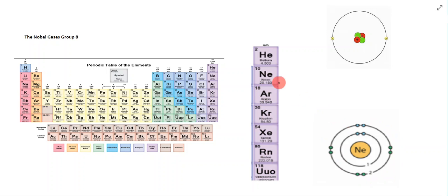They have eight electrons in their outer shell, with the exception of helium. Helium has two electrons because it only has one shell, and that first shell can contain two electrons. The noble gases are the least reactive elements on the periodic table because they have a full outer shell of electrons and don't need to gain or lose electrons. As a result, they're very inactive and won't react easily with other atoms.